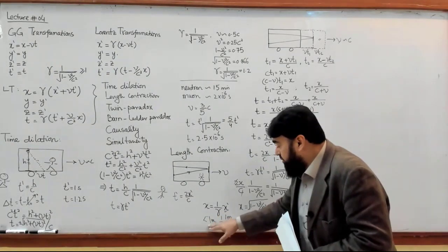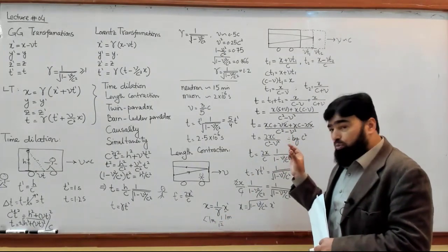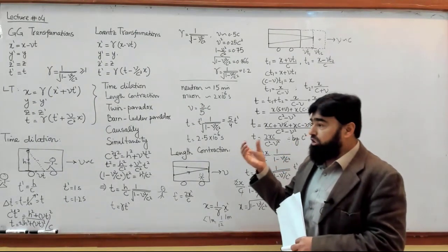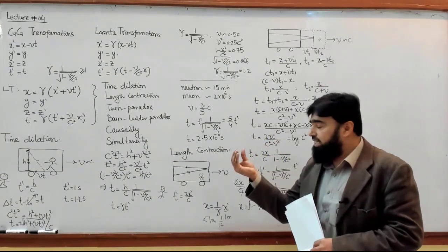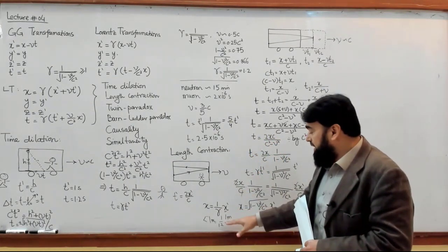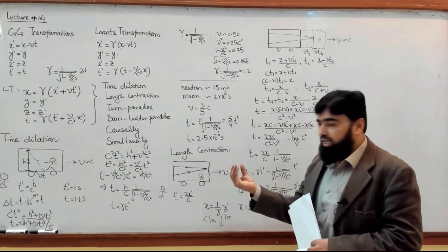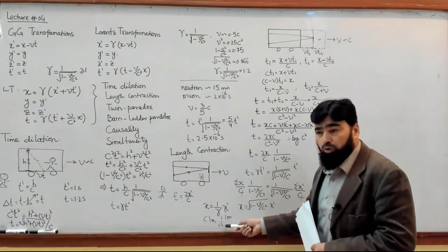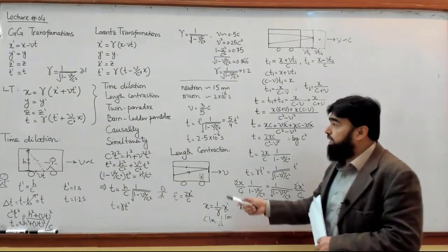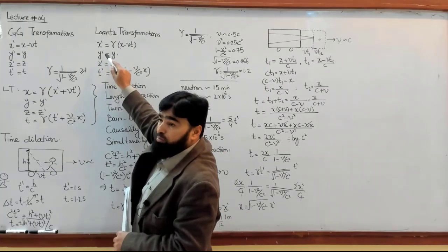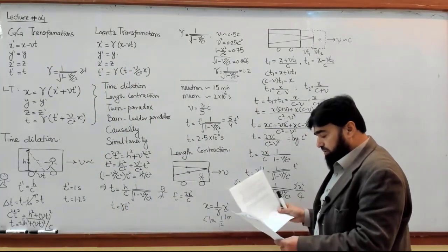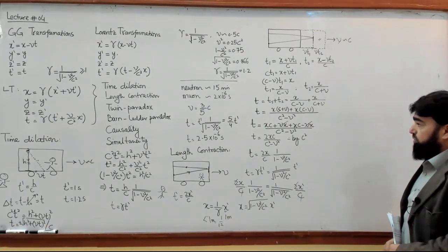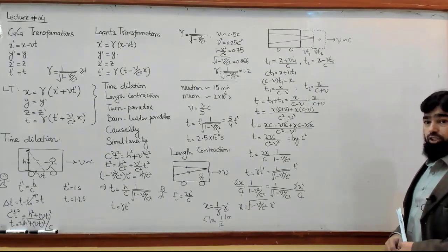The stationary observer measures less than 1 meter. So what will the stationary observer say? The stationary observer will say that the motion causes some shrinkage — like a 1 meter stick appears slightly less than that. As a consequence of time dilation, the length has shrunk. But this shrinkage will only be along the direction of motion, not perpendicular to it. This is called length contraction or length shrinkage.